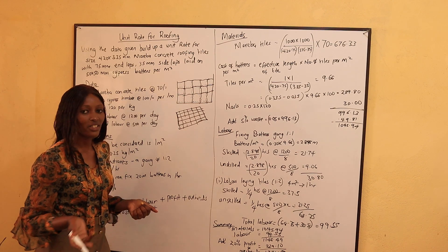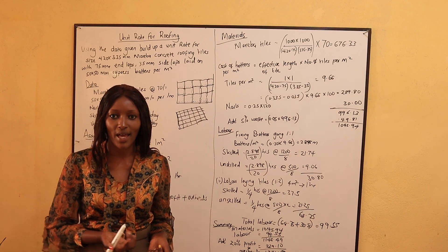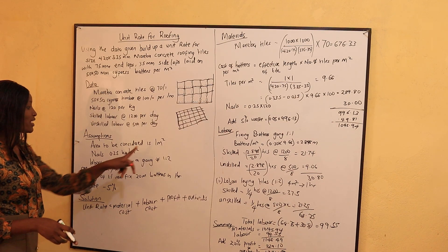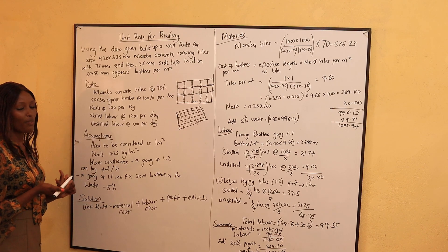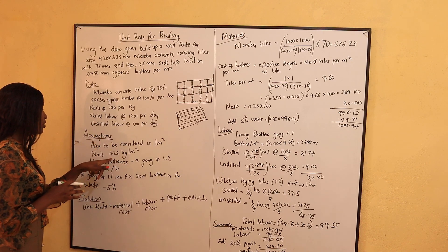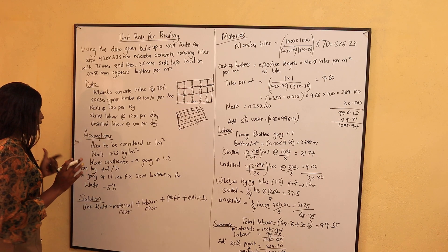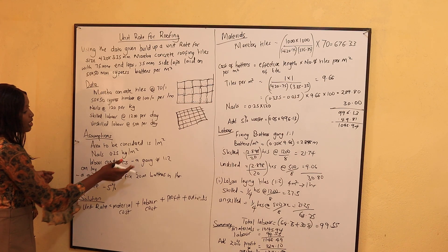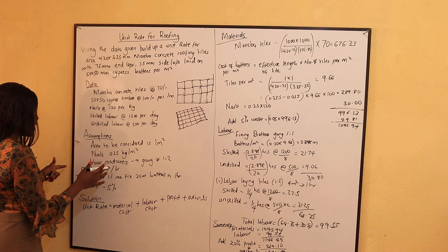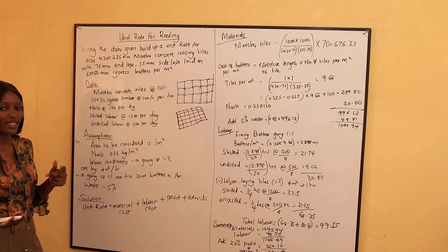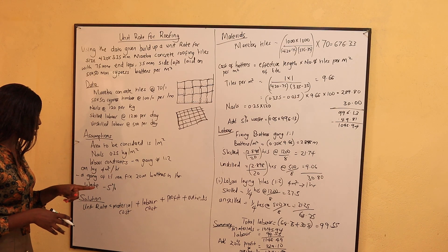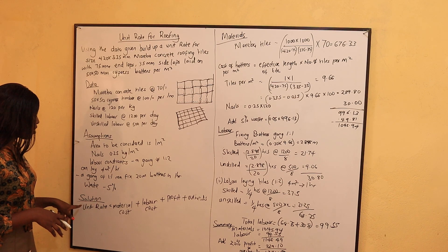When doing the unit rate, we are not given all the data required, so we make some assumptions. The area to be considered is 1 meter squared, since the unit rate should be per meter squared. Nails are assumed at 0.25 kg per meter squared. Labor constraints: a gang of 1 skilled and 2 unskilled can lay 4 meters squared in 1 hour. A gang of 1-to-1 can fit 20 linear meters of buttons in 1 hour. We shall also consider a wastage of 5%.